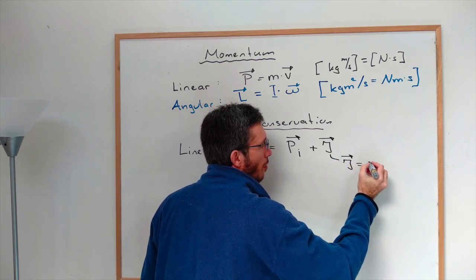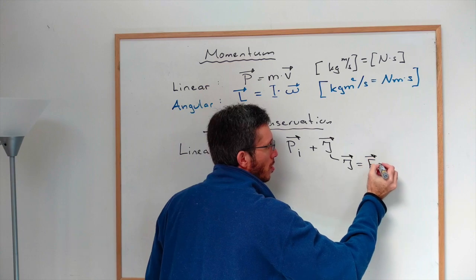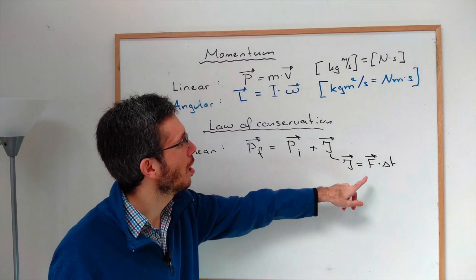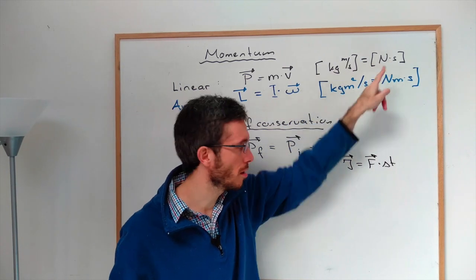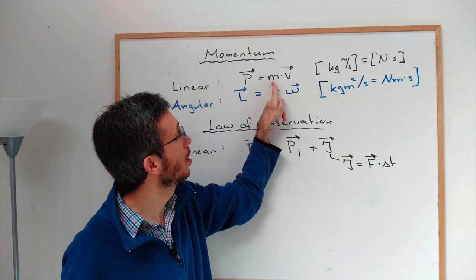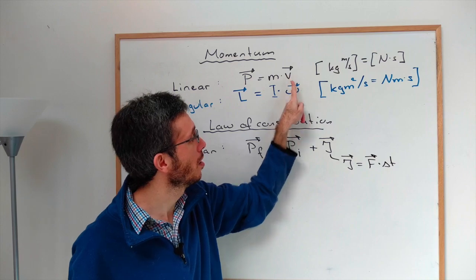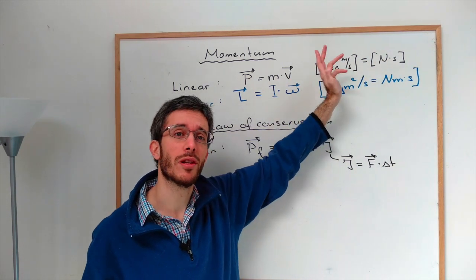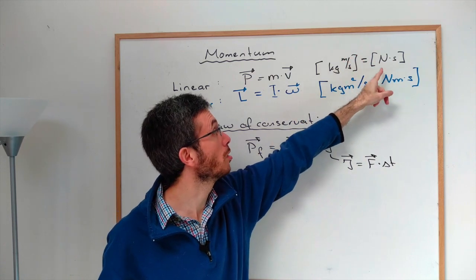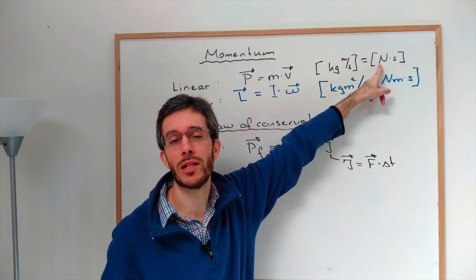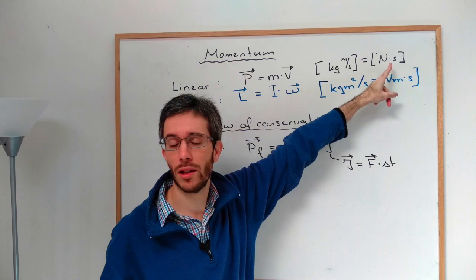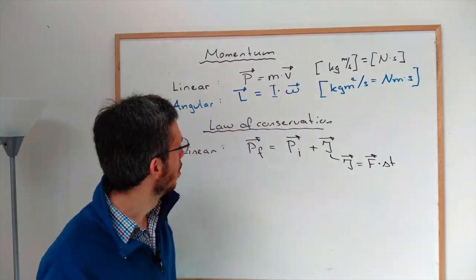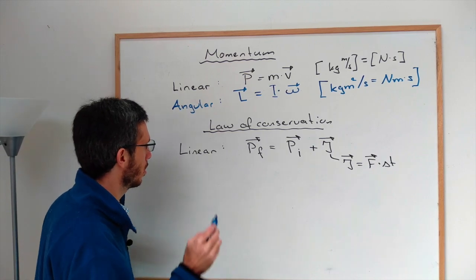This is actually how we get newton seconds as a unit — here we have kilograms meters per second, and here we have newtons times seconds, so those two must be equivalent. Breaking down a newton: it's kilograms times meters per second squared, so multiplying by seconds gives exactly kilograms times meters per second. Now for the angular case...